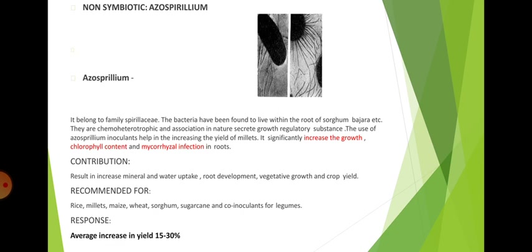Now we will discuss the non-symbiotic type, that is Azospirillum. It belongs to family Spirillaceae. The bacteria have been found to live within the roots of sorghum, bajra, etc. They are chemoheterotrophic, associative in nature, and secrete growth regulatory substances. The use of Azospirillum inoculants helps in increasing the yield of cereals. It significantly increases growth, chlorophyll content, and mycorrhizal infection in roots, resulting in increased mineral and water uptake, root development, vegetative growth, and crop yield. It is recommended for rice, millets, maize, wheat, sorghum, sugarcane, and as co-inoculant for legumes. The average increase in yield is 15 to 30%.